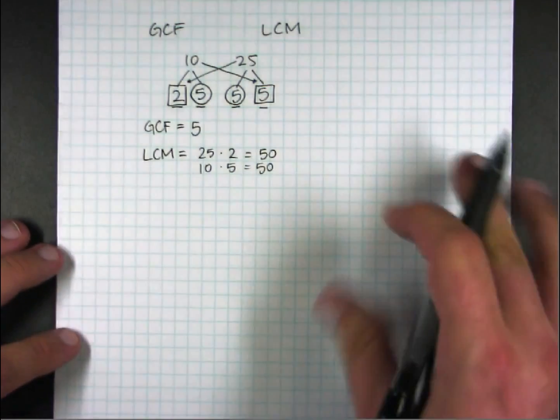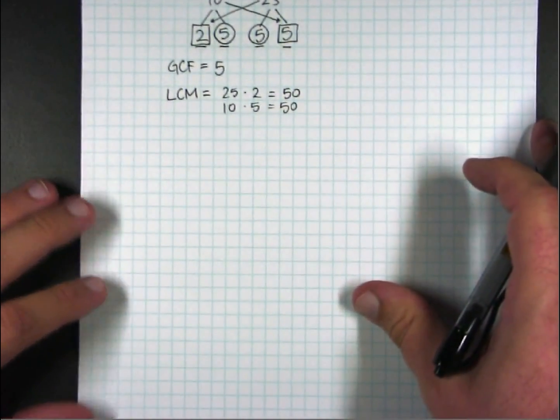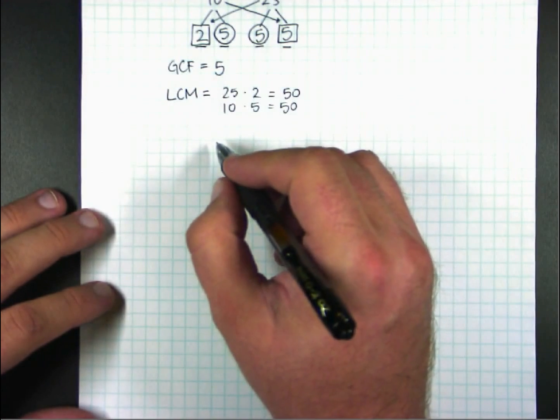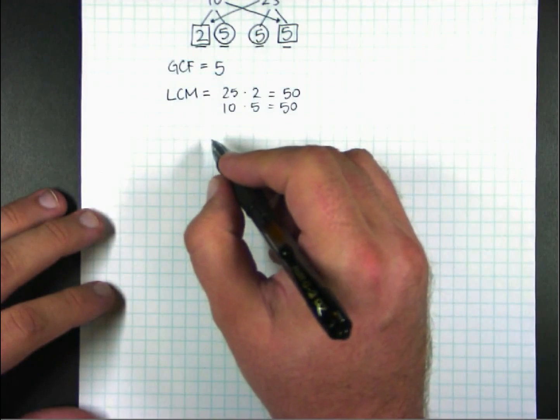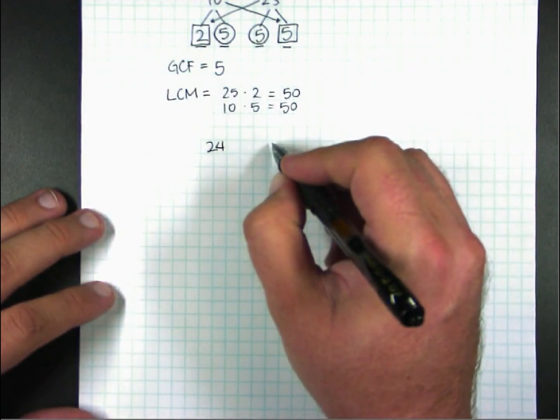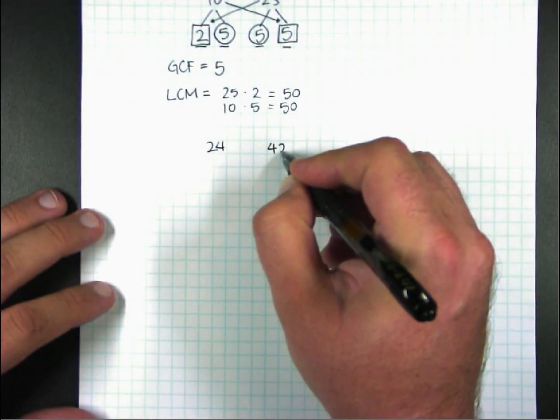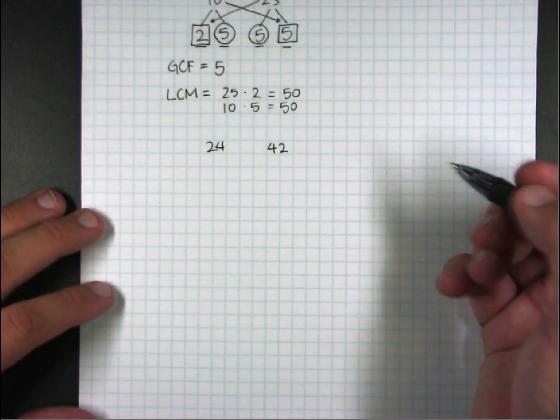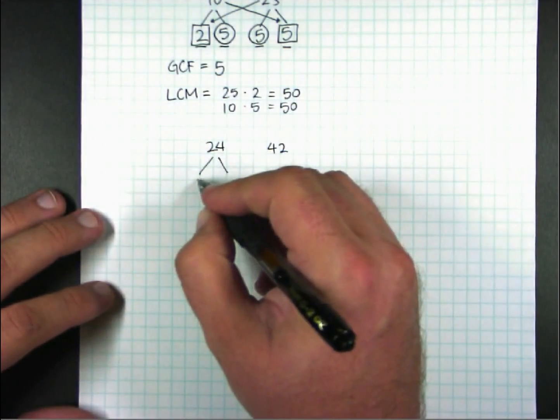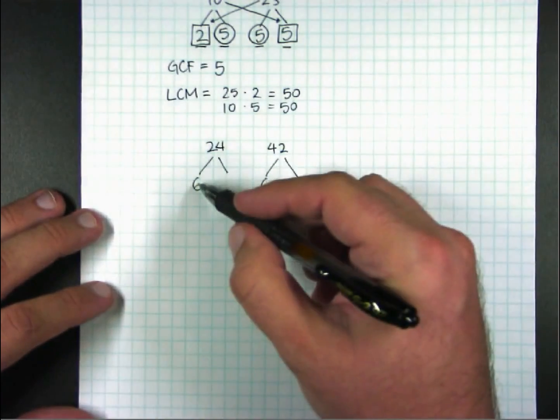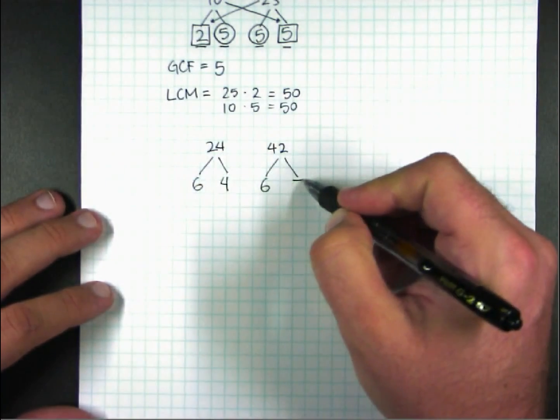Now these are easy numbers. Let's try it with little harder numbers. Let's say I want to find the greatest common factor and least common multiple of, let's say, 24 and 42. I can already see just from knowing my times tables one of the factors in common. I know it's going to be 6. Because I know from my times tables that 6 times 4 is 24. 6 times 7 is 42.